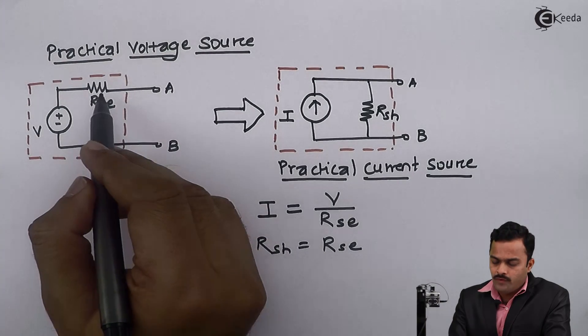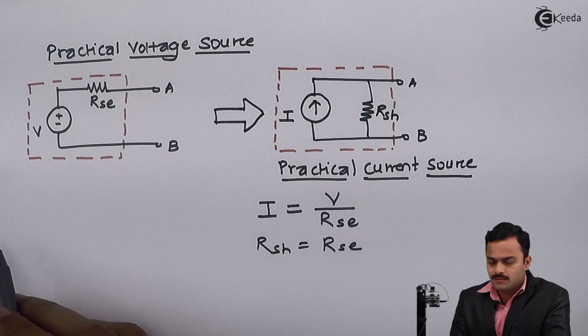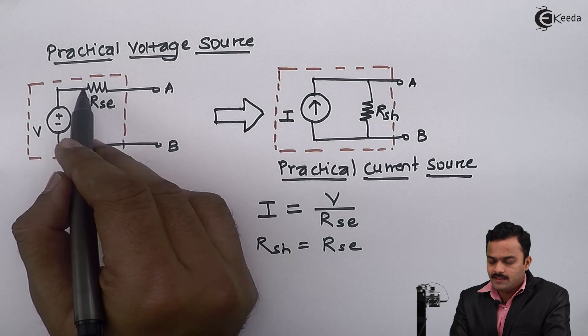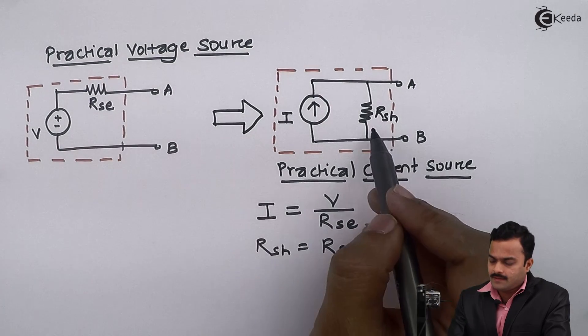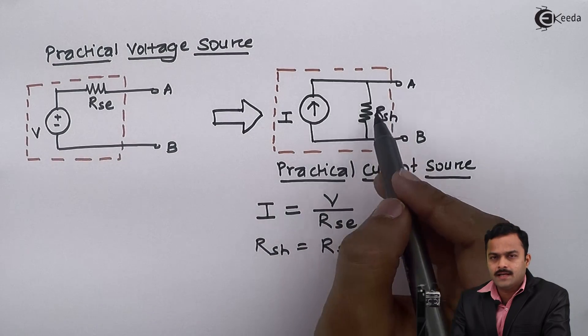Meaning, the value of resistor will remain same but the orientation will change. Here it is coming in series but here same value resistor will come in parallel.